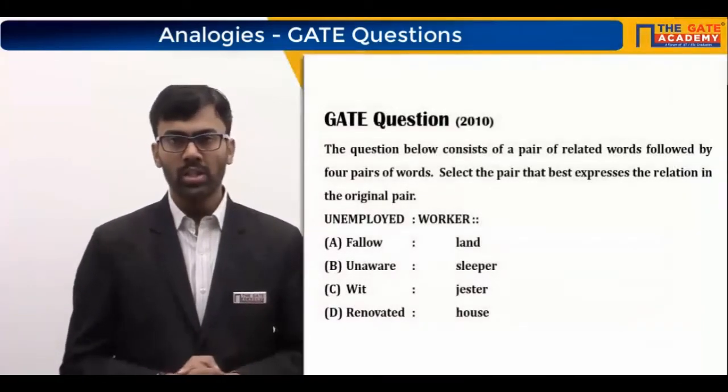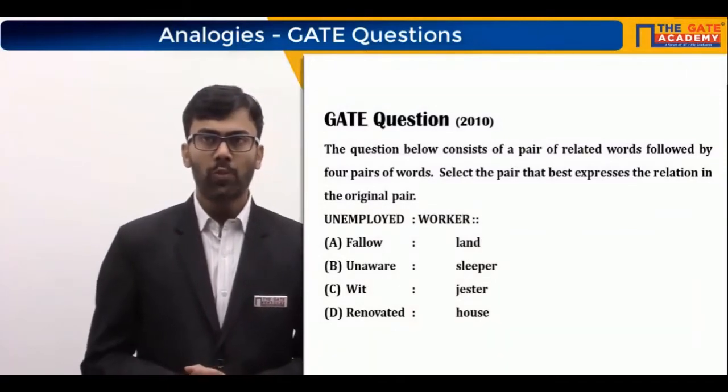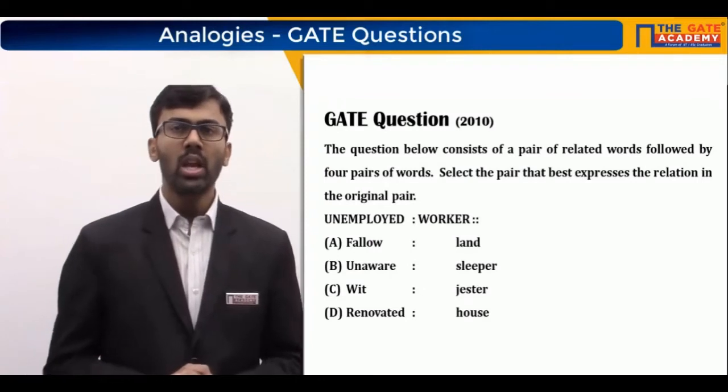We now discuss some questions that have appeared in previous years' GATE exams based on analogies. The first question is on your screen. Most of these questions will include proper sentences explaining how to analyze the pairs of words given and what kind of relationship you need to identify. The instructions state: the question below consists of a pair of related words followed by four pairs of words — select the pair that best expresses the relation in the original pair.